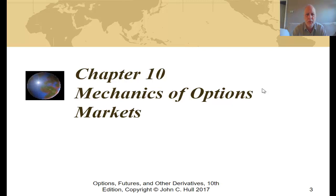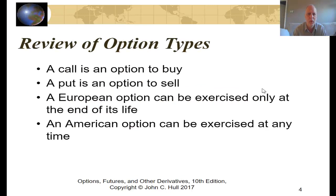In this video, we will cover the mechanics of options markets out of the excellent text Options, Futures, and Other Derivatives by John C. Hull. Options come in two major types. A call option is an option to buy an underlying security for some set price for some set time. A put option is an option to sell an underlying security for some set price for some set time. A European option can be exercised only at the expiration of its life, whereas an American option can be exercised at any time, although in many cases it is not advantageous to exercise it until the end of its life.